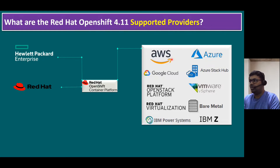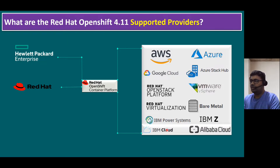We can run it on public clouds: AWS, Azure, and Google Cloud. We can also run it on private cloud environments: Azure Stack, VMware vSphere, Red Hat OpenStack platforms, and Red Hat Virtualization. It also runs on IBM Power Systems and IBM Z. Beyond the main three public clouds, OpenShift supports IBM Cloud and Alibaba Cloud as well. And recently, Red Hat OpenShift added support for Nutanix hypervisors.